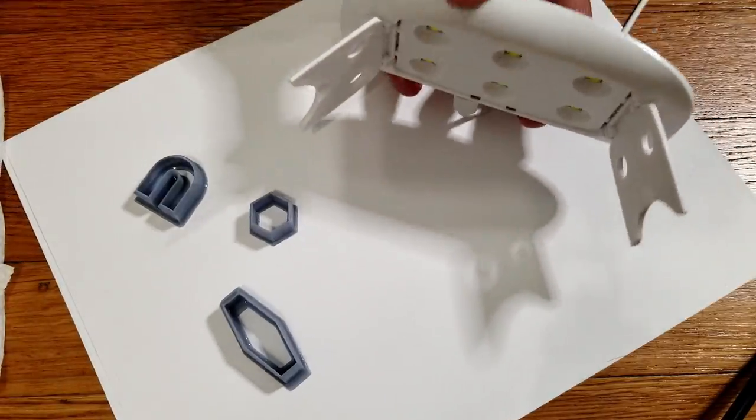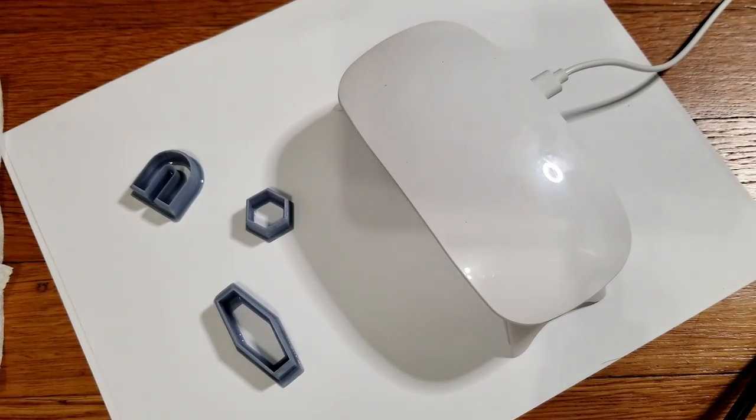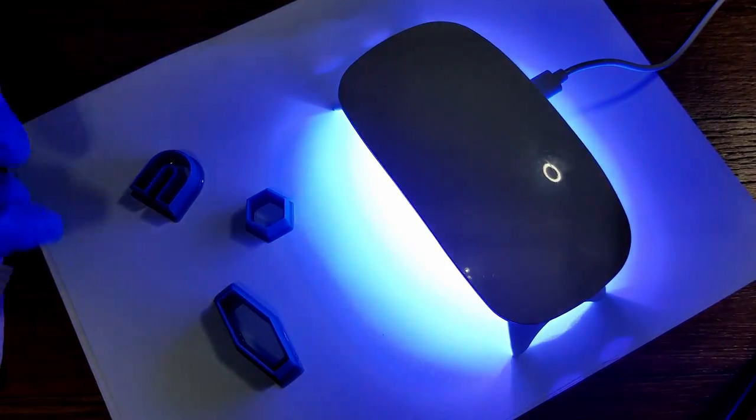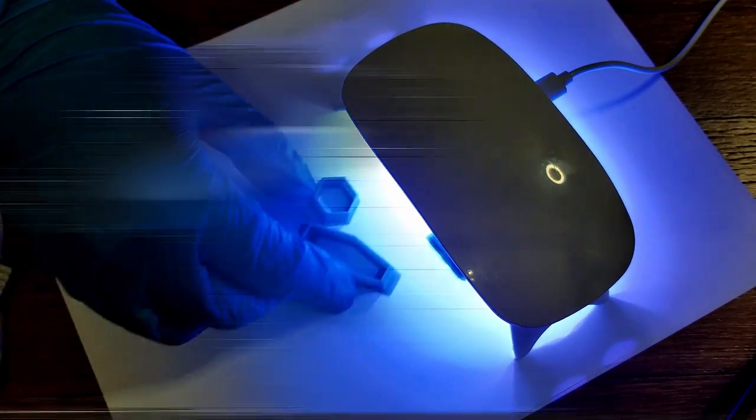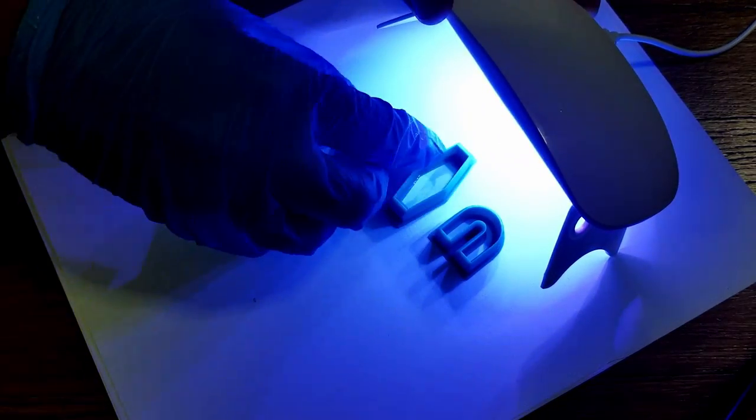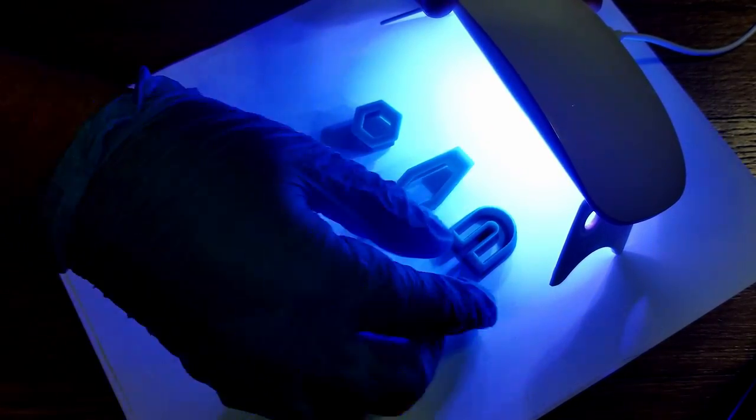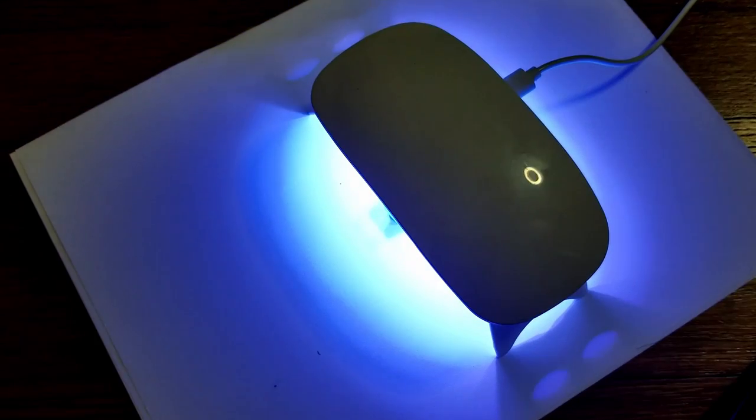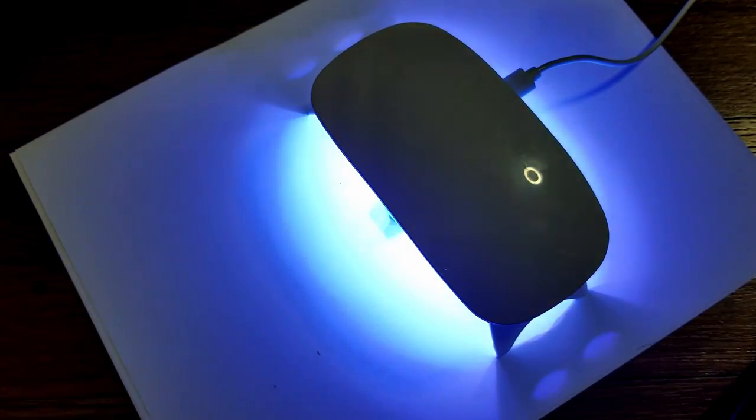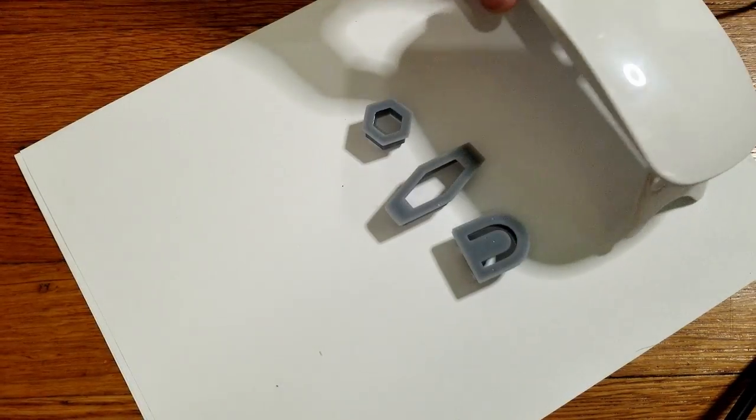All right, time to get our UV light out. To me, this thing looks like an alien spaceship that's getting ready to beam up some little plastic trinkets. We generally do about 60 to 90 seconds on each side and then just flip them and do that again on the other side. That should really be all you need just to cure the whole thing fully.